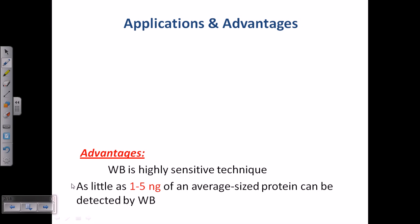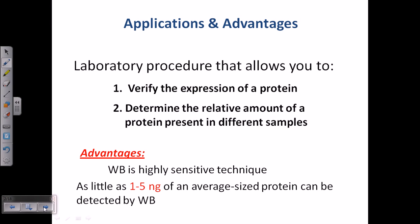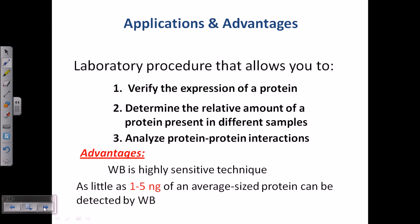The applications of western blotting include: verifying the expression of a protein inside the cell; determining the relative amount of a protein present in different samples — for example, from the same cell at different time points; and analyzing protein-protein interaction. It is a very useful technique for analyzing protein-protein interaction.